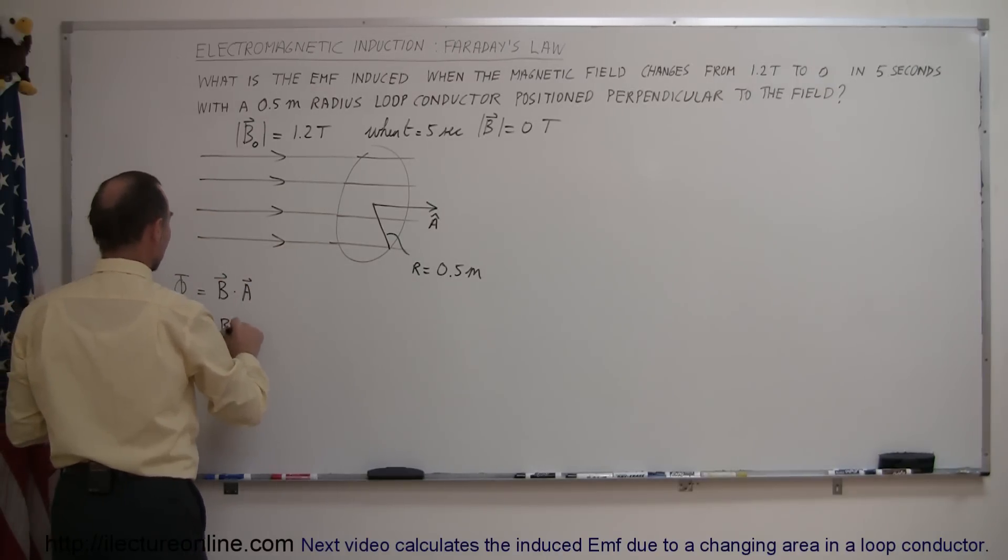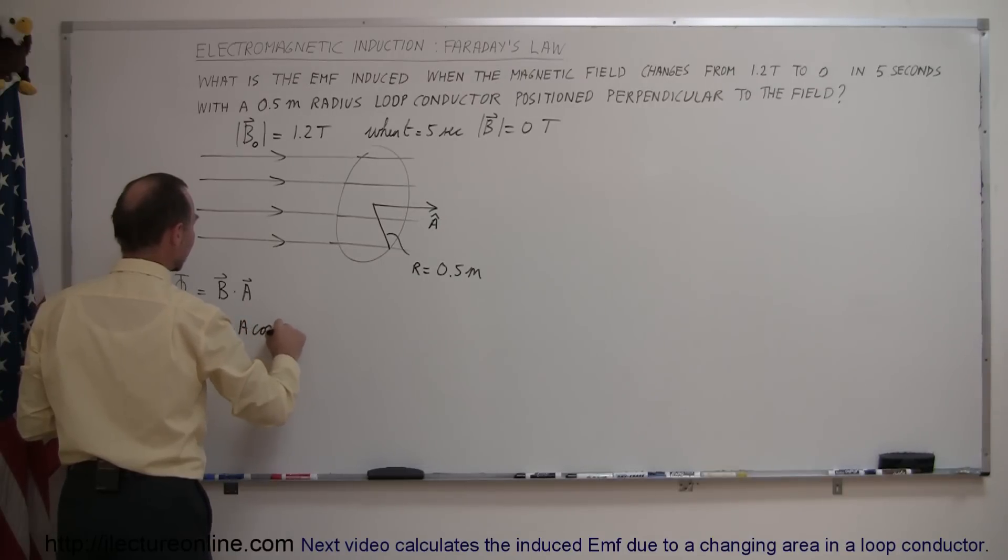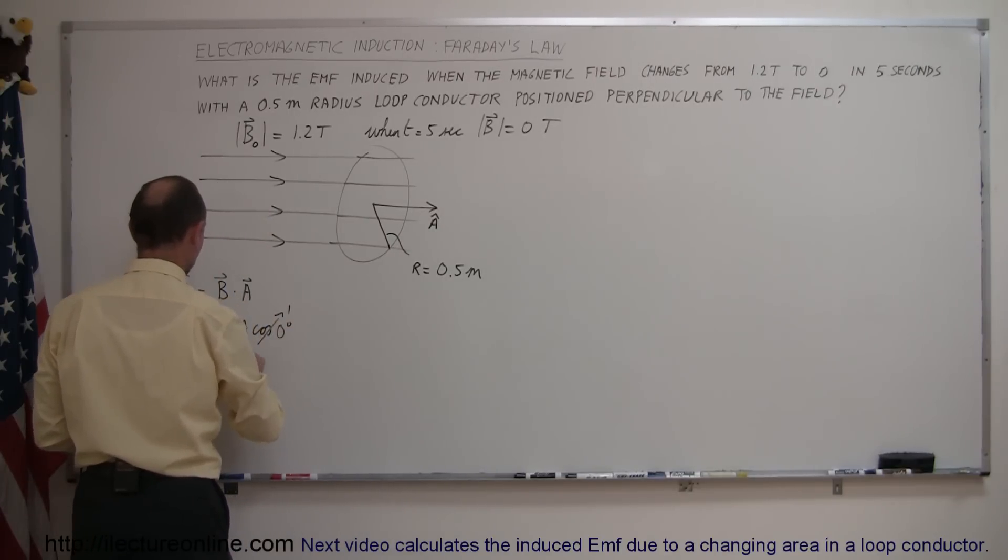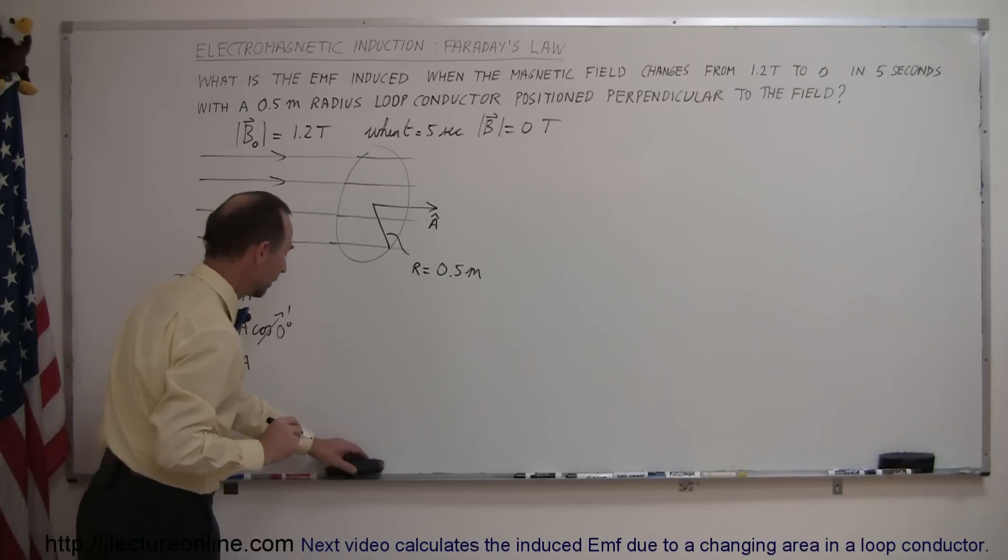this can now be written as B times A times the cosine of 90 degrees. Oh, not 90 degrees, it's zero degrees because it's parallel, cosine of zero degrees which of course is one, so it's equal to B times A.